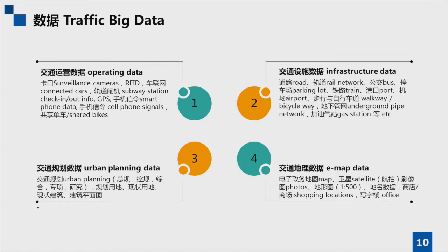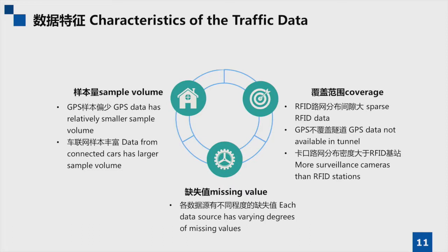Geographic data related to transportation is also incorporated, including building and road locations, satellite images, and maps. Planning data is another category — within the city study area, knowing where new commercial or high-tech zones will be built is important context for analysis.